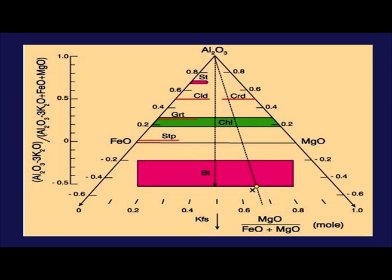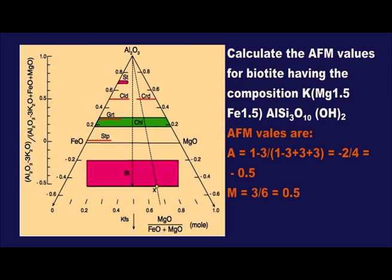The advantage of this AFM projection is that it allows the variation in mineral chemistry with respect to Fe/Mg ratio with changing metamorphic grade. Example: calculate the AFM values for biotite having the composition K·Mg1.5·Fe1.5·Al·Si3·O10·(OH)2. A equals (1 minus 3) divided by (1 minus 3 plus 3 plus 3) equals minus 2 divided by 4 equals minus 0.5. M equals 3 divided by 6 equals 0.5.